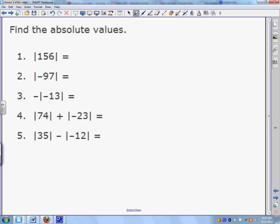So try these in your notebook, and then we will check them. So how far is 156 from 0 on a number line? It is 156. How far is negative 97? That is 97 units away from 0.